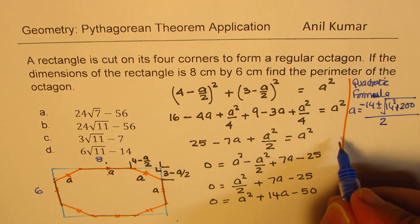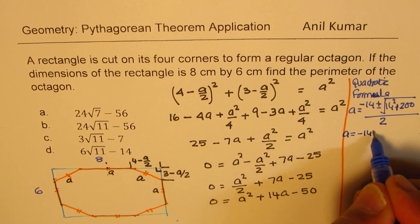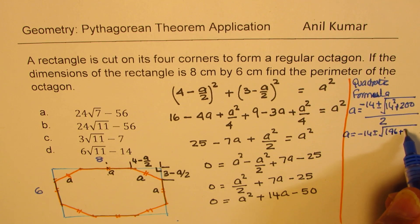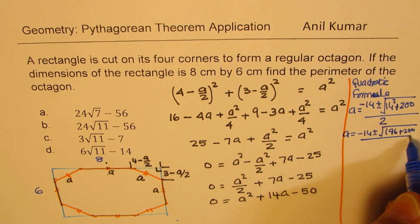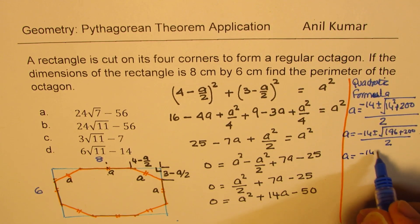So we can say this is minus 14 plus minus square root of 14 square is 196. So we get 196 plus 200 over 2. A bit of calculation here. Minus 14 plus minus, and that is 396 over 2.